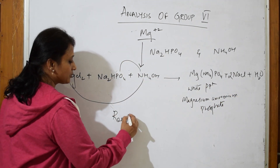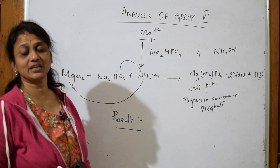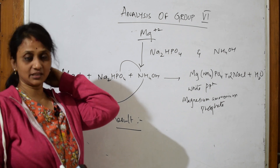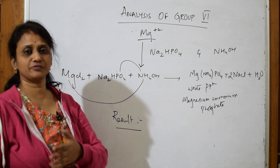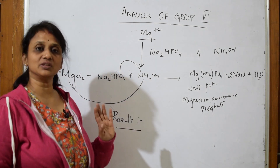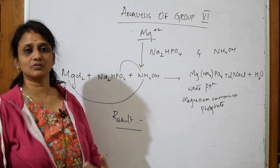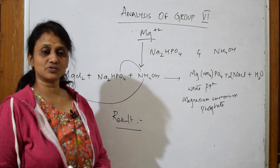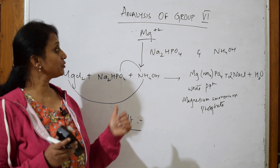After analyzing all groups, write the result: the given inorganic salt contains a specific acidic radical (e.g., carbonate, acetate, phosphate, sulfate) and a specific basic radical. For example: magnesium chloride, calcium sulfate, barium sulfate, lead chloride, lead acetate, lead nitrate, barium nitrate, etc. Always finish your answer with the result — it really matters.